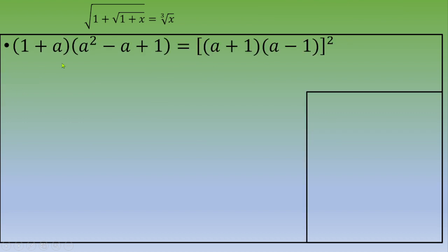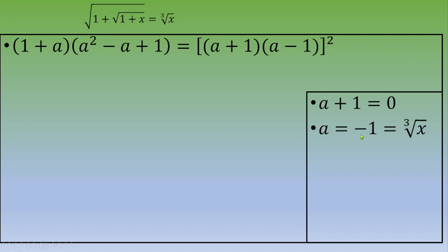We can simplify the factor (1 plus a) from both sides, but only if it is different from zero. Case 1: if a plus 1 equals 0, then a equals negative 1. Since a equals the cubic root of x, this gives x equals negative 1.